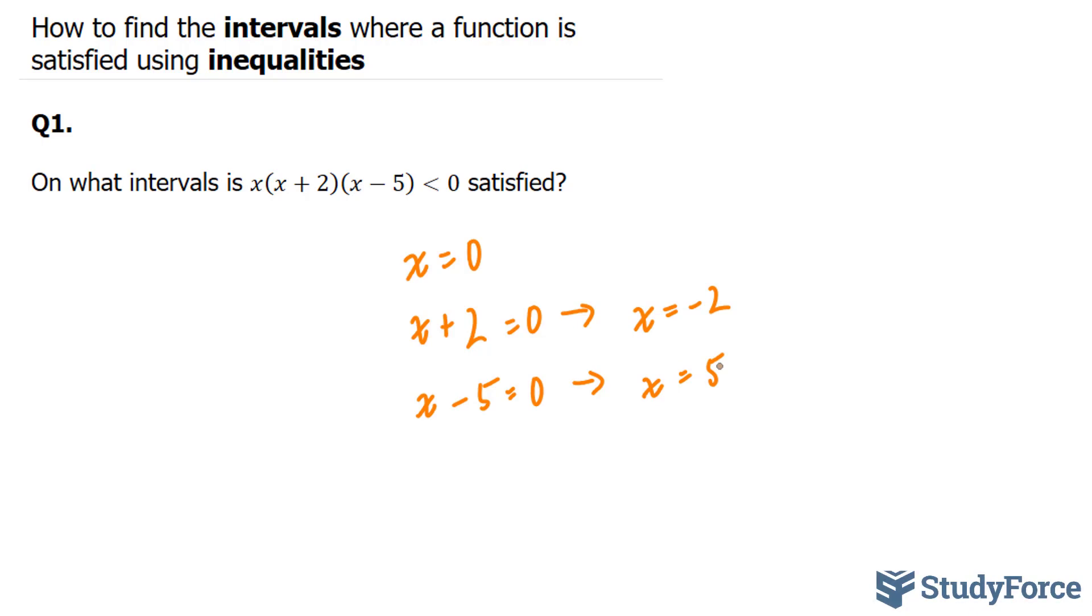Now since we have three critical points, that means we have four intervals. The intervals will be, starting from lowest to highest, -2, 0, and 5. And this will lead us to x < -2, x is between -2 and 0, x is between 0 and positive 5, and finally x must be greater than 5.